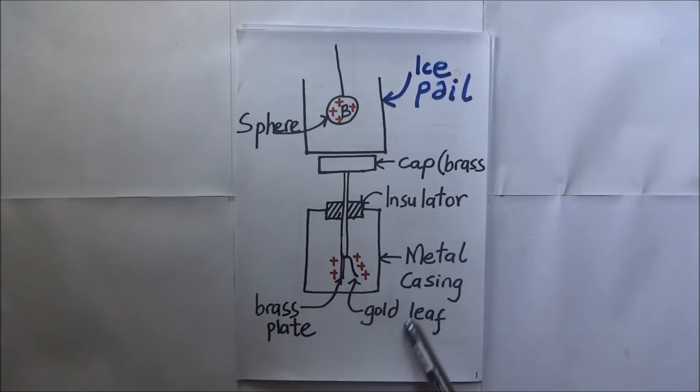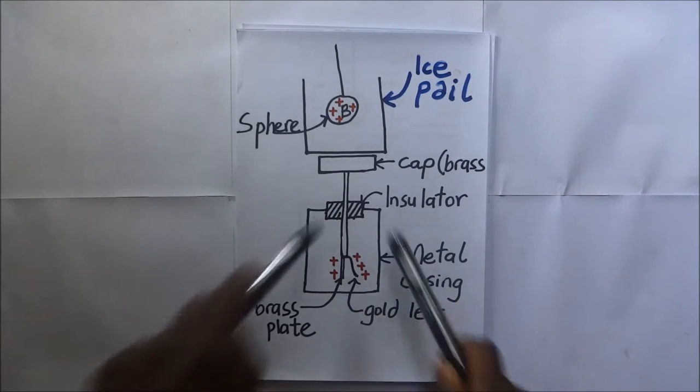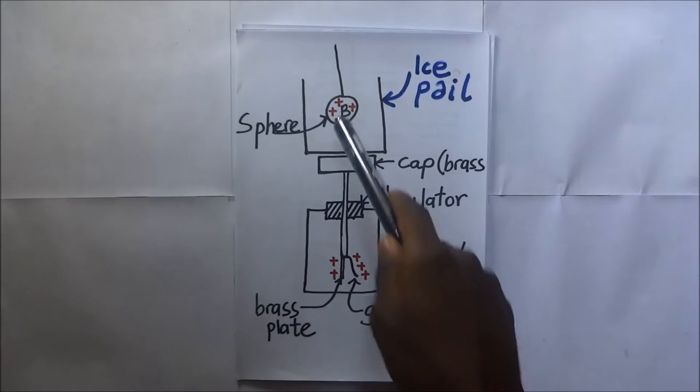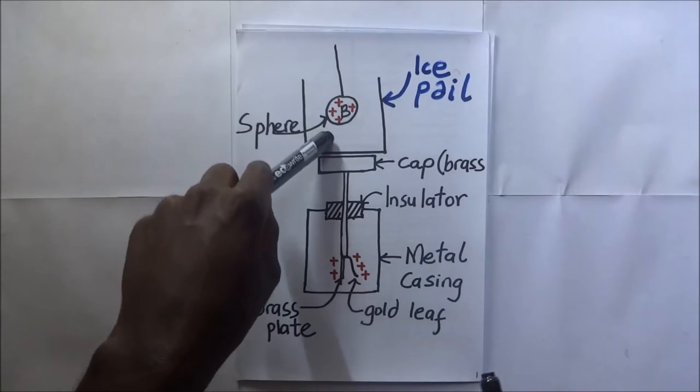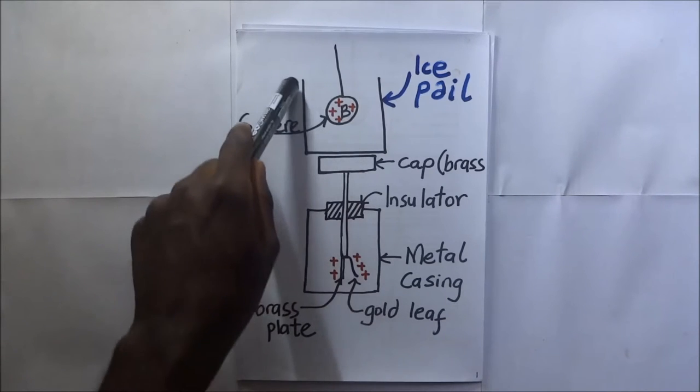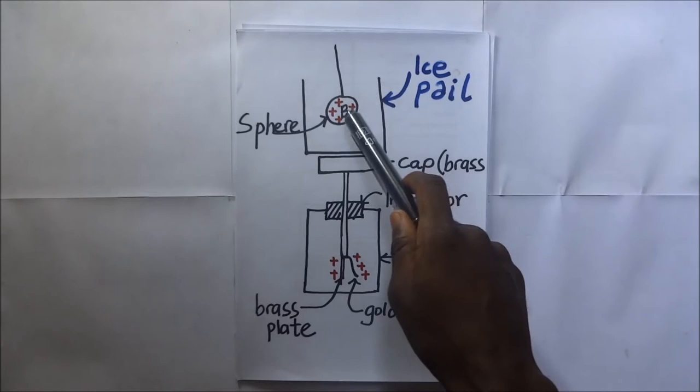A metal casing and an insulator. This is the apparatus. Now to begin the experiment, we remember that we are carrying out this experiment to show that no charge resides inside the hollow conductor. Sphere B is put inside an ice pail, but we do not allow this sphere to touch the walls. We just leave it hanging.